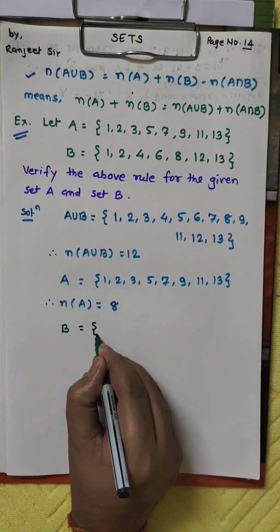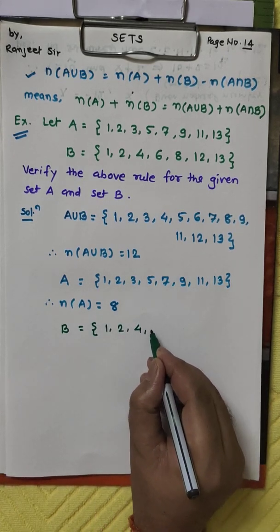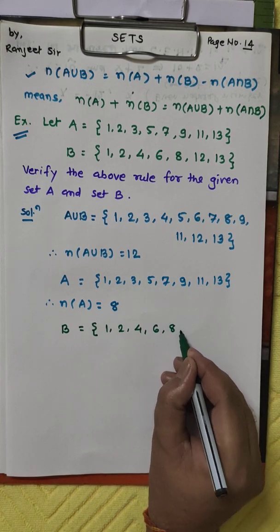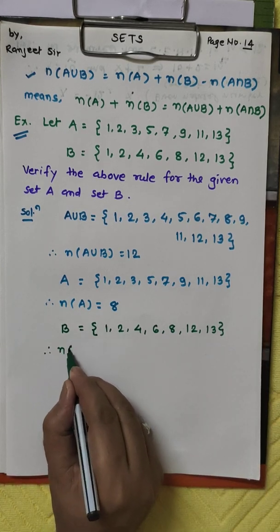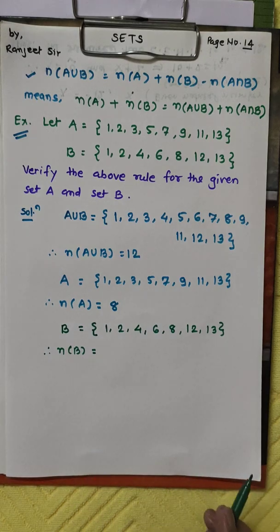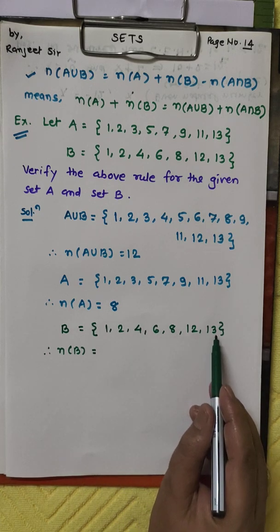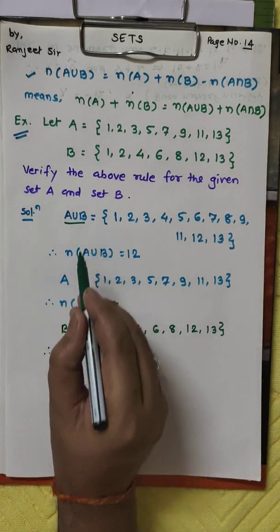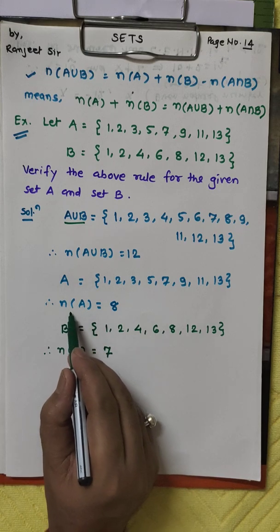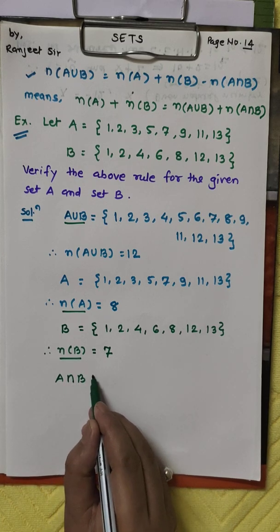Now we find n(B). Set B = {1, 2, 4, 6, 8, 12, 30}. Counting: 1, 2, 3, 4, 5, 6, 7 — there are 7 elements present. So n(B) = 7.